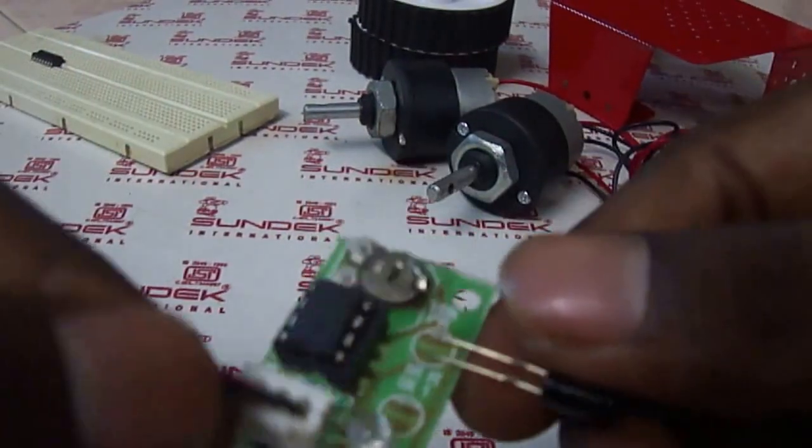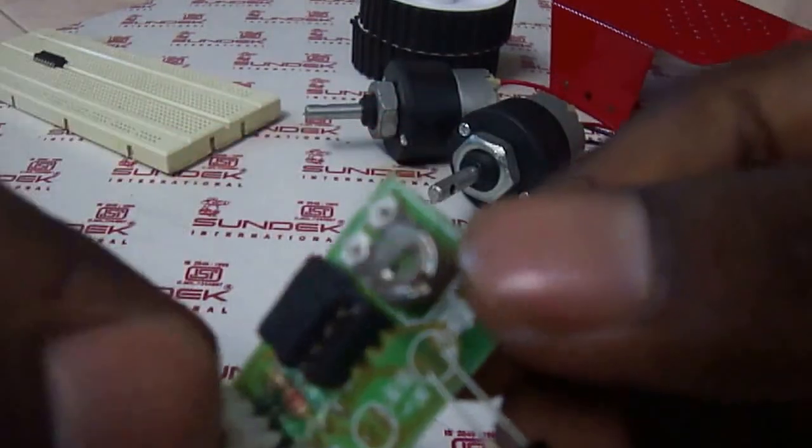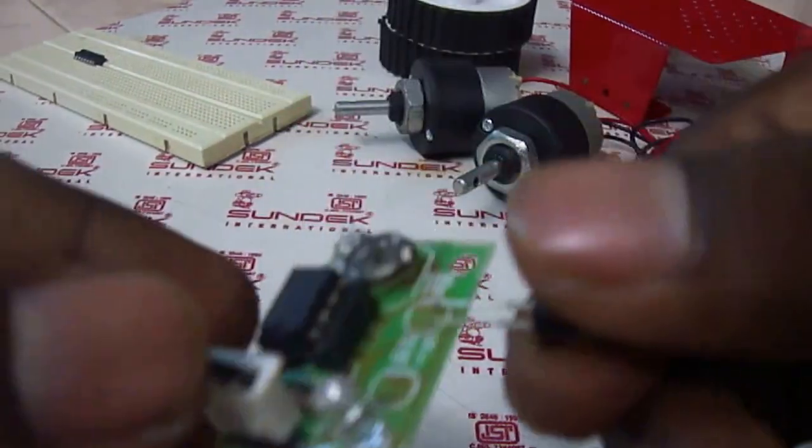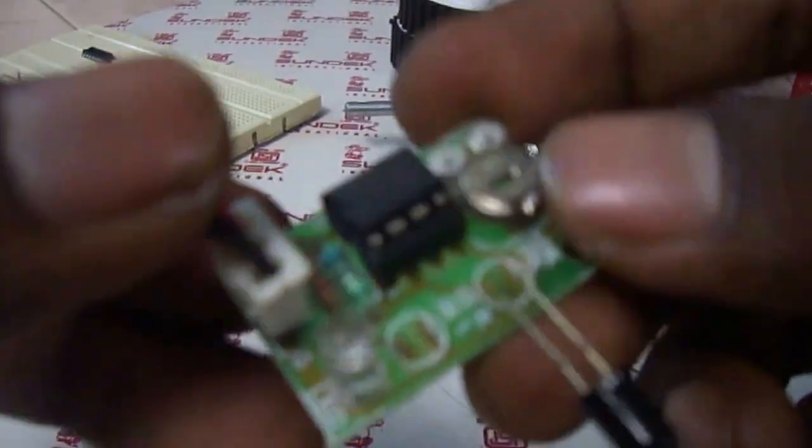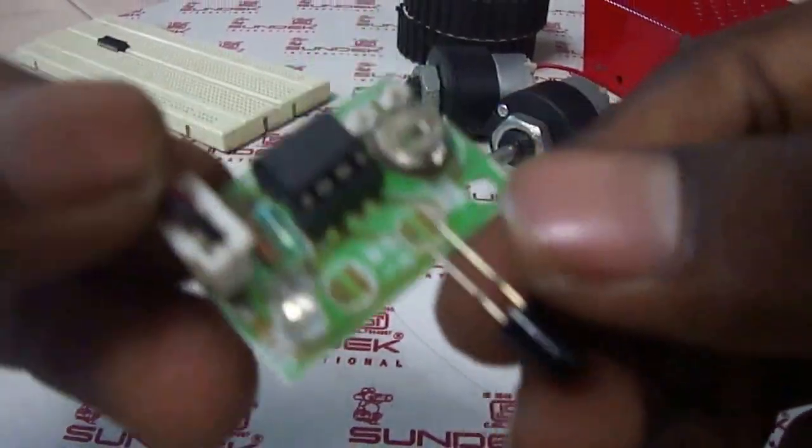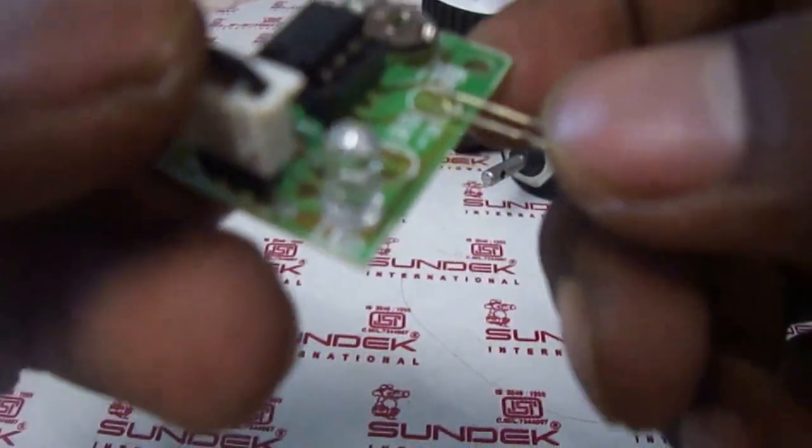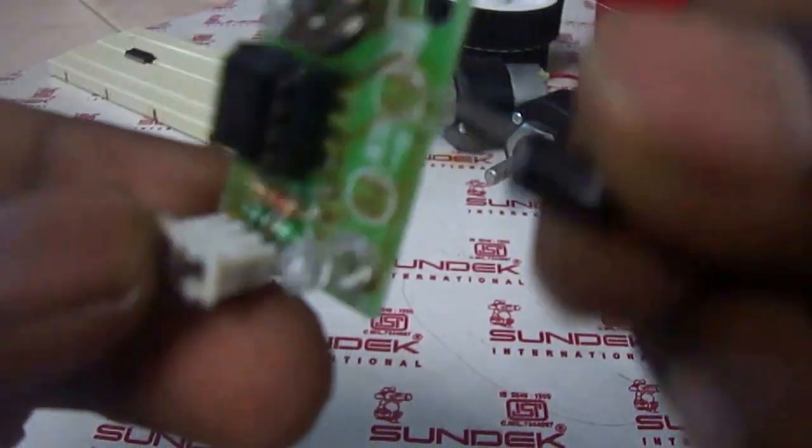And this is called a fire sensor or a flame detecting sensor. This is a normal IR sensor where I removed the IR transmitter and just have the photodiode here.